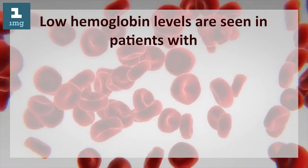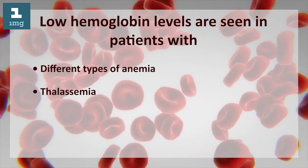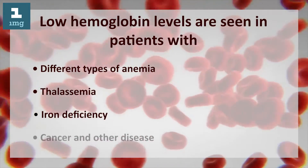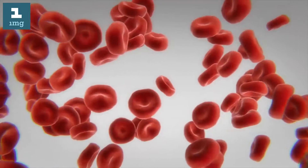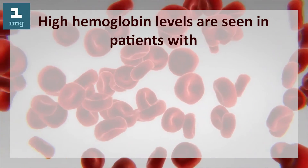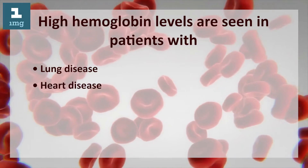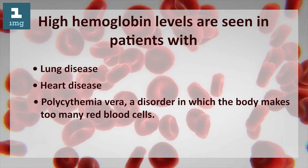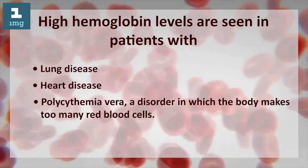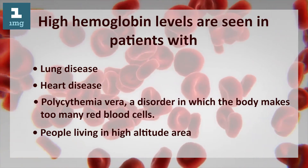What does the result of a hemoglobin test mean? Low hemoglobin levels are seen in patients with different types of anemia, thalassemia, iron deficiency, cancer, and other diseases. High hemoglobin levels are seen in patients with lung disease, heart disease, polycythemia vera (a disorder in which the body makes too many red blood cells), and people living at high altitude.